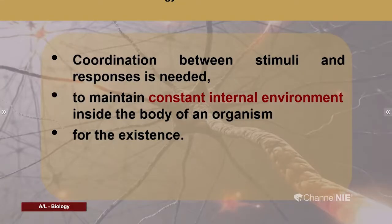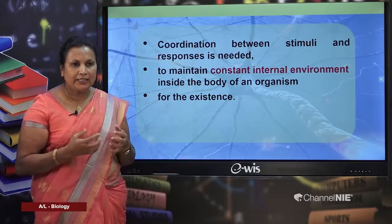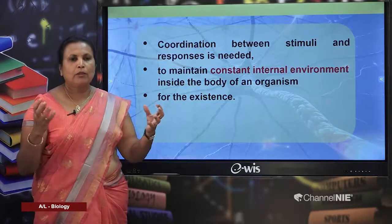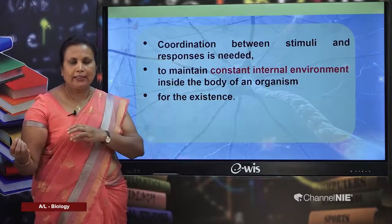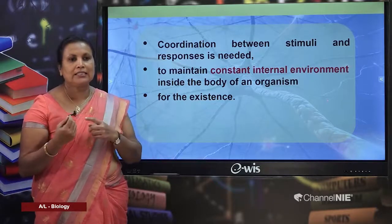Why is coordination needed? Coordination between stimuli and responses is needed to maintain a constant internal environment inside the body of an organism for its existence. Coordination requires certain communication systems — the body stimuli and the responses should be communicated through certain signals.